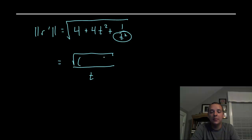That's that same perfect square, 2t squared plus 1 quantity squared. So this is actually turning out pretty nice. This will be 2t squared plus 1 all divided by t.